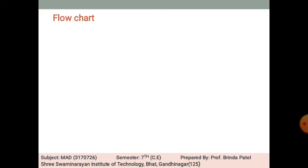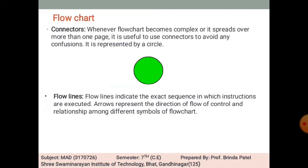Flow lines indicate the exact sequence in which instructions are executed. Flow lines are represented by arrows, which indicate the direction of flow of control and the relationship among the different symbols of a flowchart.